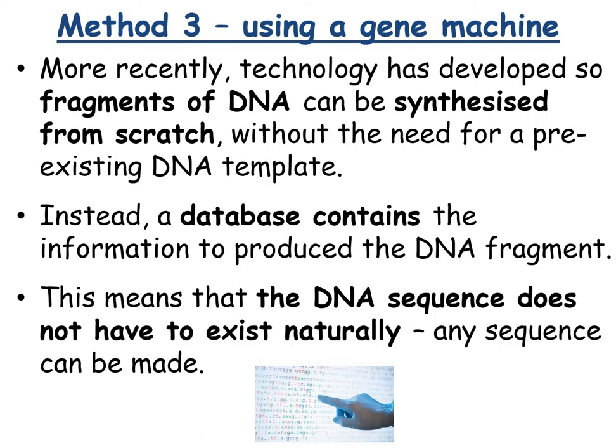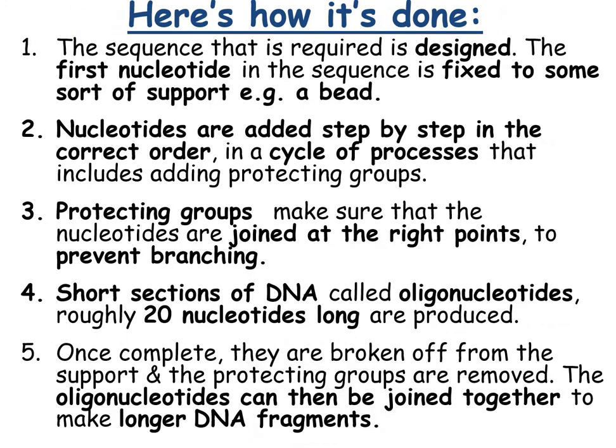The third method is using a gene machine. More recently, technology has been developed that means you can actually make DNA fragments from scratch. The DNA sequence doesn't have to exist naturally — you design the sequence, the first nucleotide is fixed to a support like a bead, then nucleotides are added step by step in the correct order in a cycle that includes adding protecting groups. These protecting groups make sure nucleotides are joined at the right points and prevent branching, keeping it as one straight chain. Short sections of DNA called oligonucleotides, roughly 20 nucleotides long, are produced, then broken off from the support, the protecting groups are removed, and the oligonucleotides are joined together to make longer DNA fragments.